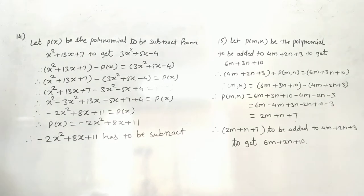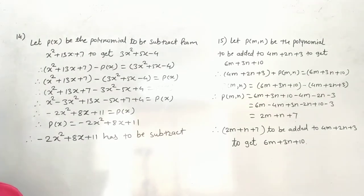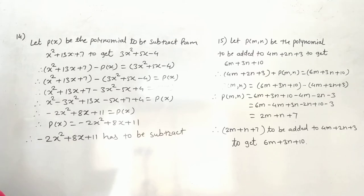Question number 14: Which polynomial is to be subtracted from x² + 13x + 7 to get the polynomial 3x² + 5x - 4?